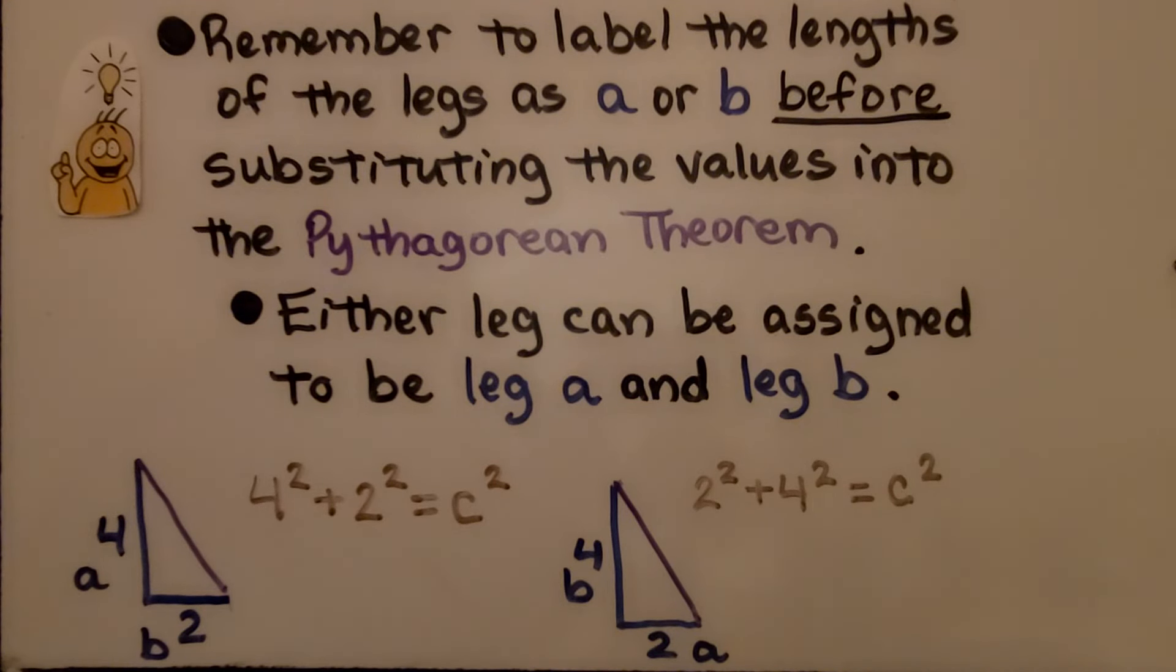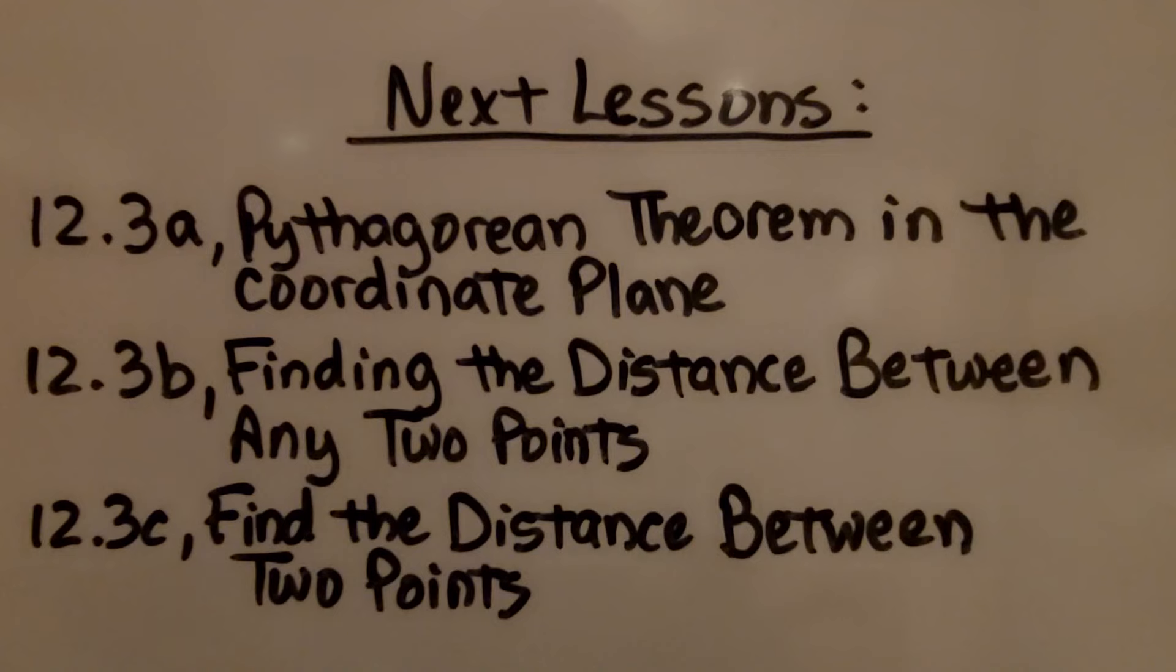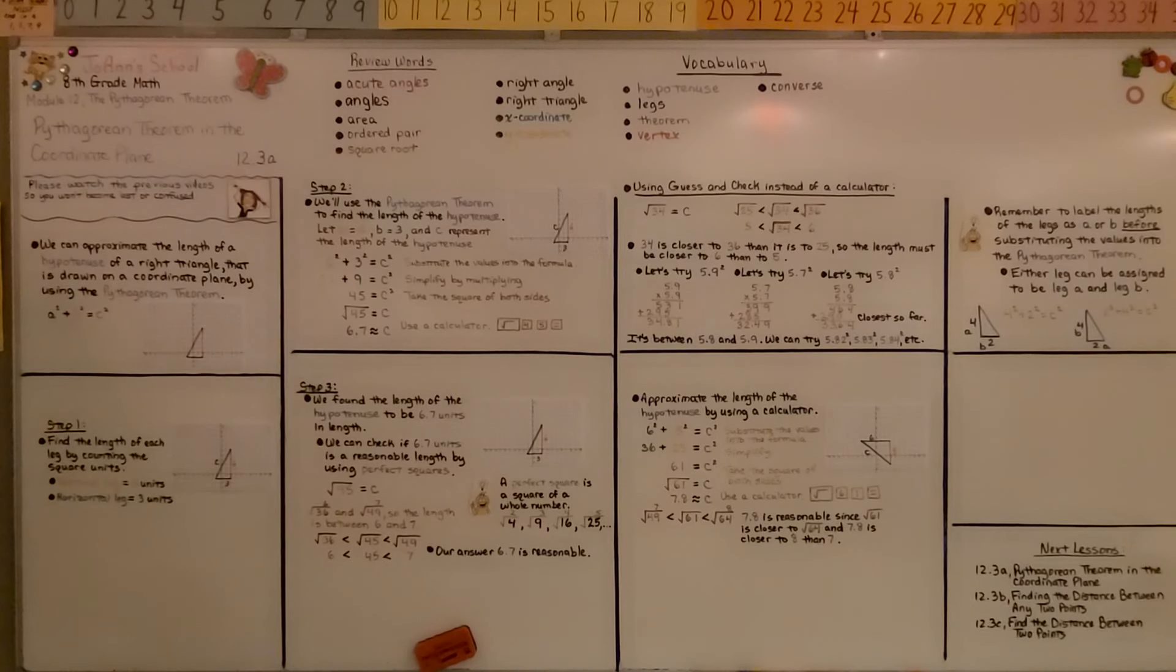Remember to label the lengths of the legs as A or B before substituting the values into the Pythagorean theorem. Either leg can be assigned to be leg A and leg B. We're finished with 12.3a. We're moving on to 12.3b, finding the distance between any two points. I hope you enjoy the rest of your day and join me for the next part of the lesson. Bye!